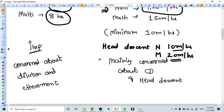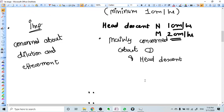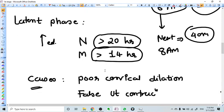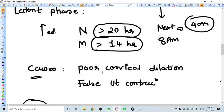Prolongation of latent phase - what are the reasons? In nulliparous women more than 20 hours and in multiparous women more than 14 hours.